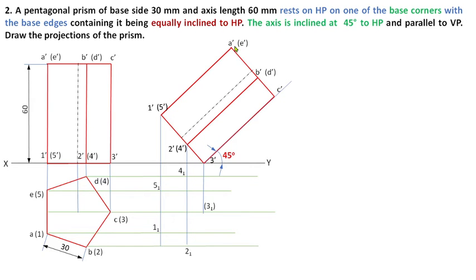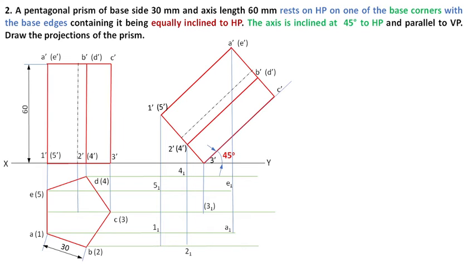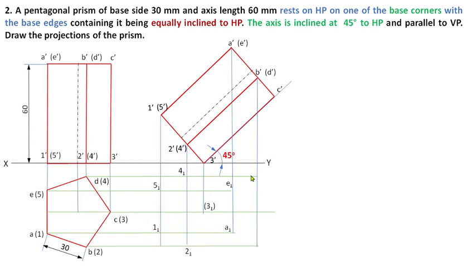Similarly, extend the projectors from the top face of the pentagon A, B, C, D, E and mark all five corners: A1, E1. Corner E in the top view and E dash in the front view both meet at E1. Extend projectors for B dash and D dash — their projectors from the top view meet at B1 and D1. Extend the projector from C dash to get the meeting point C1.